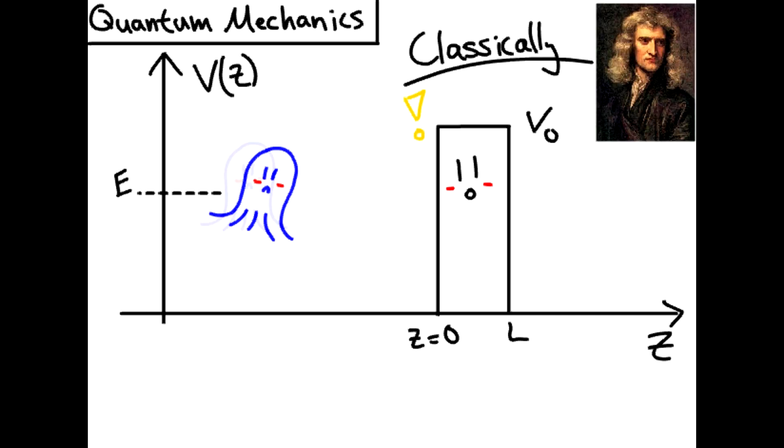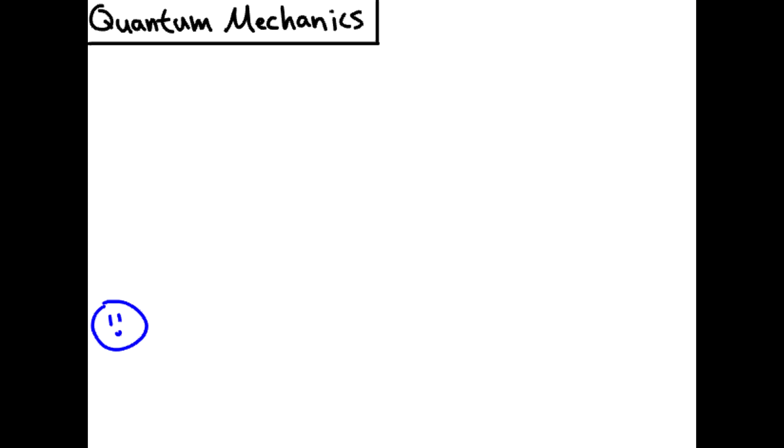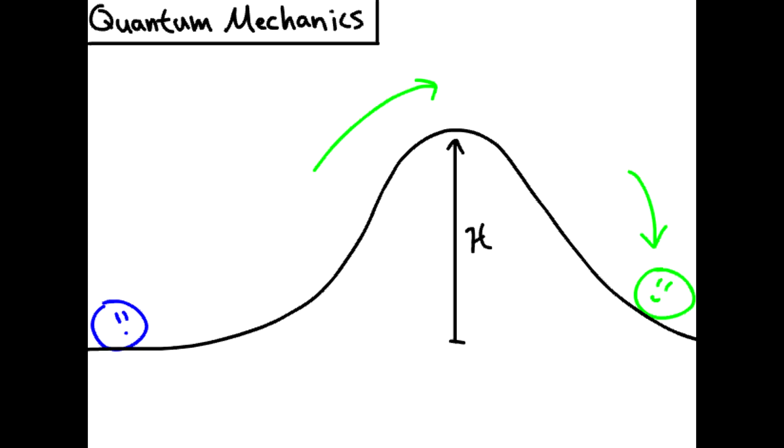Classically, this particle has no chance of getting through. Think of a ball trying to roll up a hill. It cannot pass over the hill if it does not have more kinetic energy at the bottom than potential energy at the top. Typically, the perceived phenomenon is the ball making it to a point and then rolling back down.